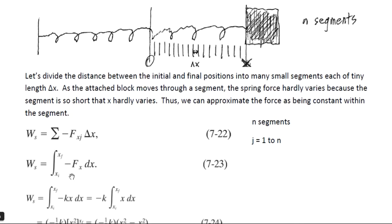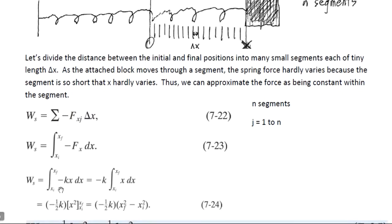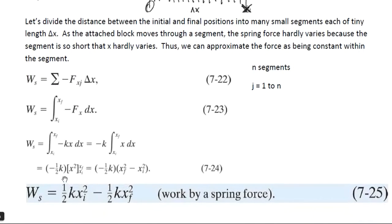We know from Hooke's Law that the magnitude of the spring force is kx, so we substitute F with kx. Since negative k is a constant, we pull it outside the integral. The integral of x with respect to x is one half x squared. This gives us the expression: negative one half k times the quantity x final squared minus x initial squared. Multiplying through by the negative sign, we get the final equation: one half kx initial squared minus one half kx final squared.